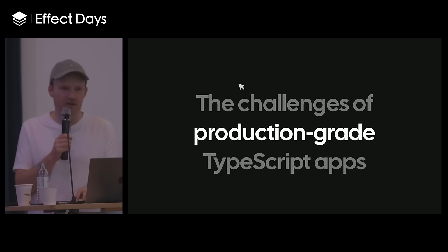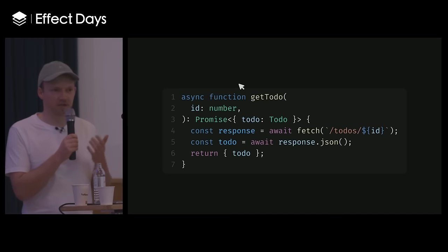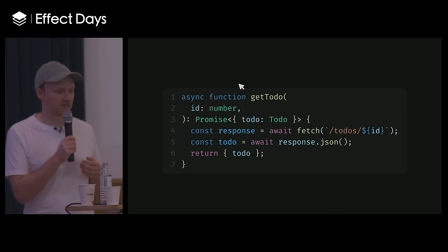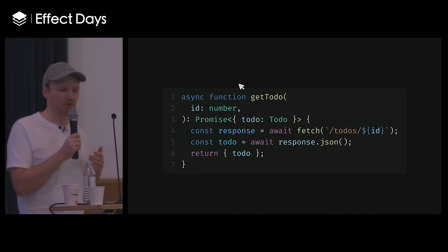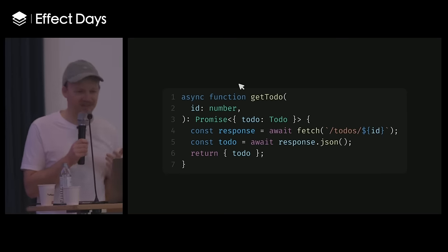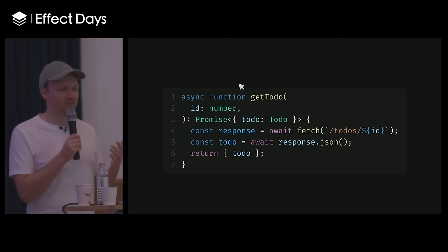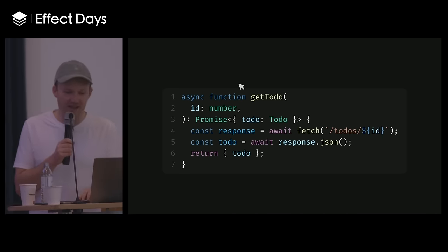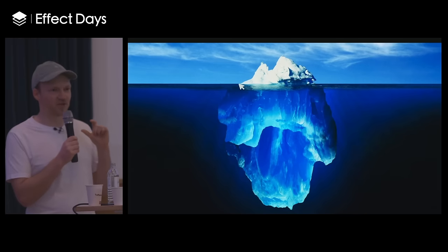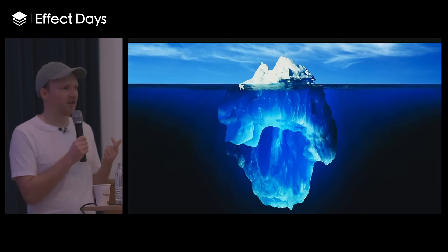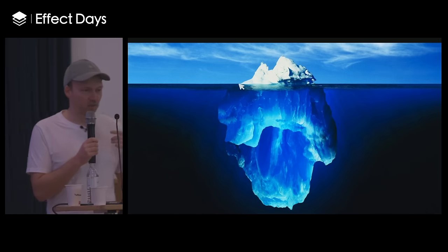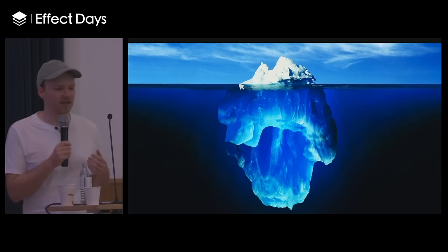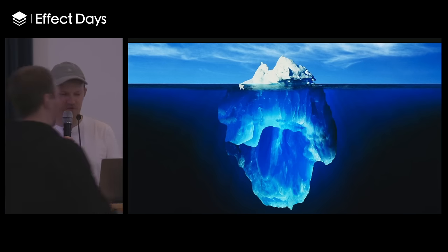I want to walk you through a simple example that I'm sure most of you have built thousands of times. Let's say we want to do a simple fetch call from a todos endpoint. We're fetching from an endpoint, getting the response JSON, and then getting the data ready to use — easy enough. What could go wrong? I've learned this code is just the tip of the iceberg of what we actually need to deal with to make an app production-ready.